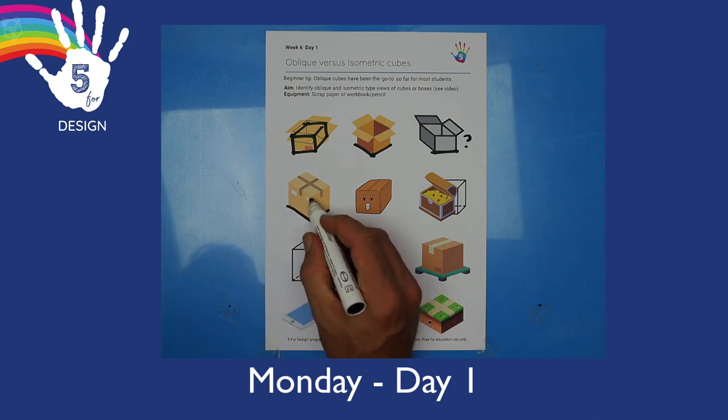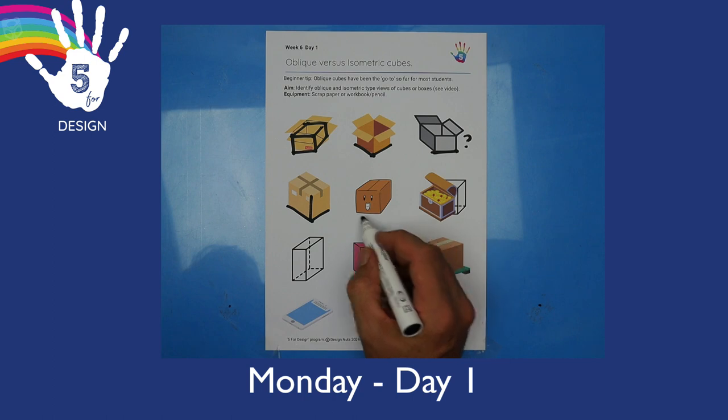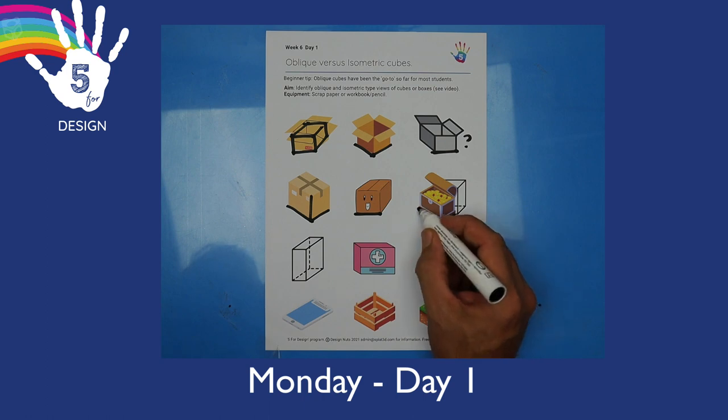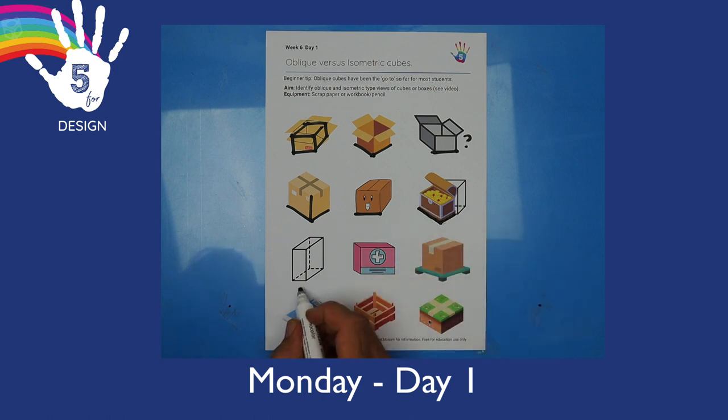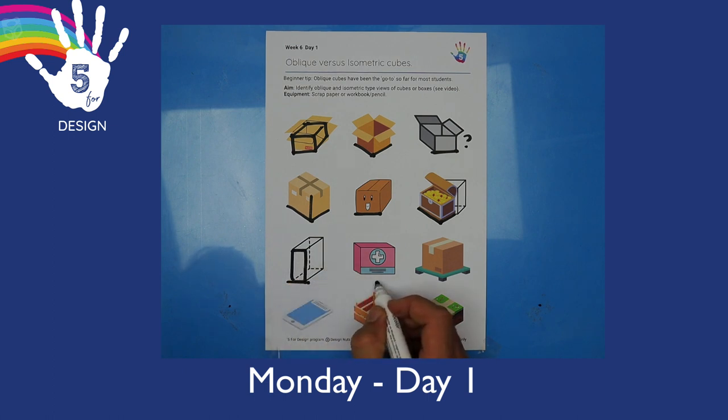What about the next one? One of the ends is straight onto us, or it has a flat line, makes it oblique. And the treasure chest full of gold is, of course, if you said isometric, yay, you're right. Have a go at the others on the page. Can you identify the oblique and the isometric drawings?